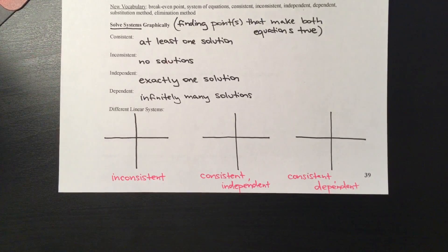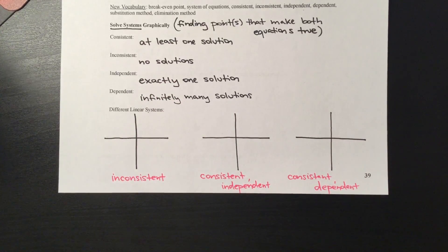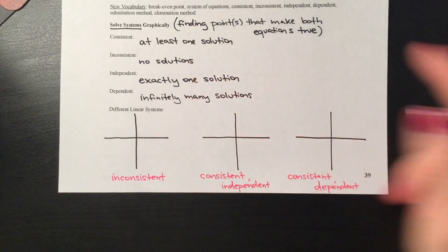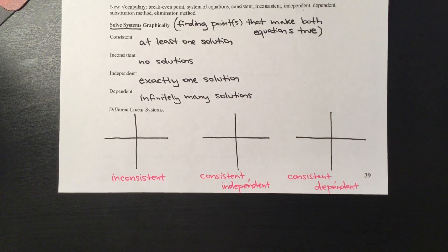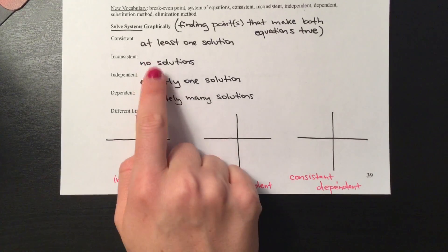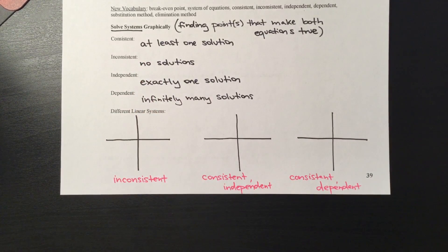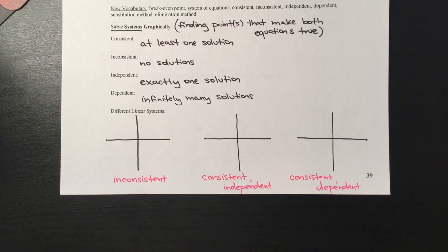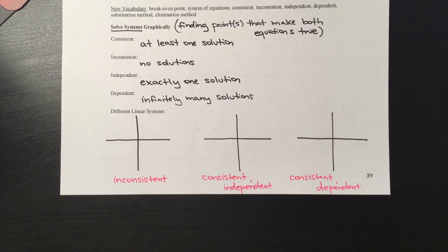Let's look back at these definitions when we go to graph our functions. Inconsistent means no solutions. When we're talking about points that make an equation true, that means it's a point on the first equation and also on the second equation. So if there are no solutions, there literally isn't a single point on the first line that's also on the second line. That means our graphs never intersect each other, and the only way for two graphs to never intersect is for them to be parallel.